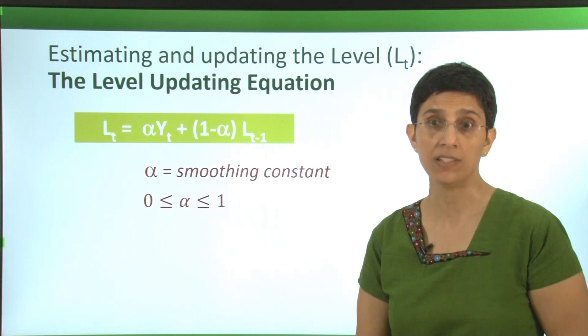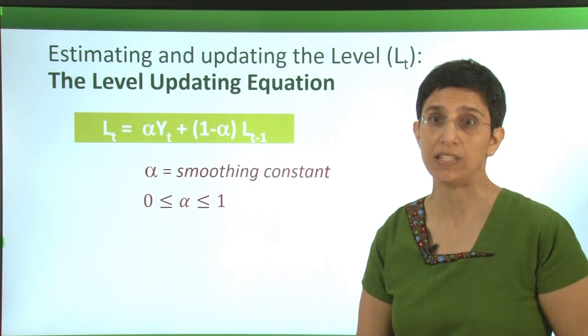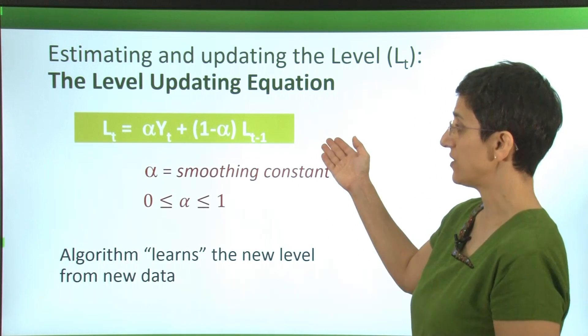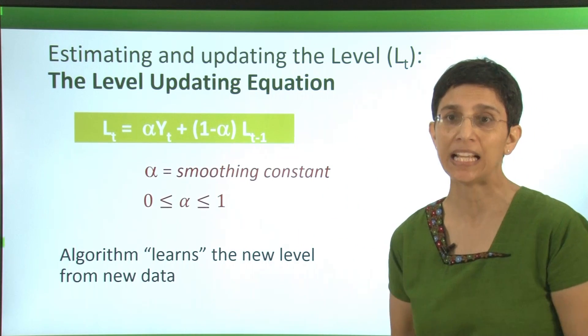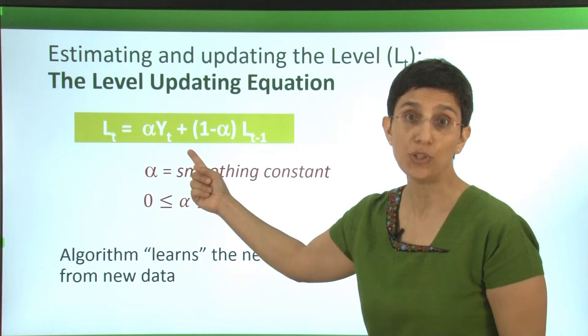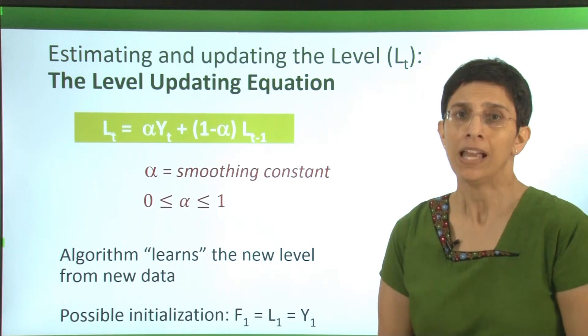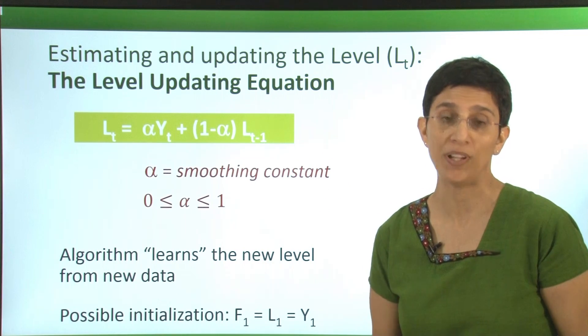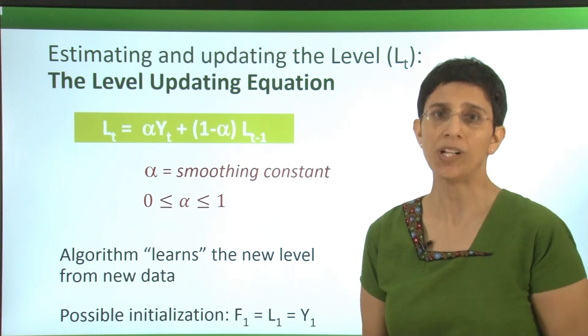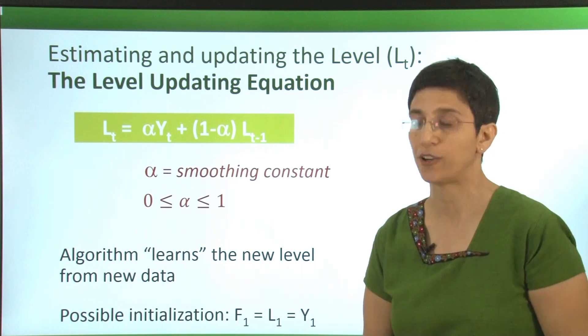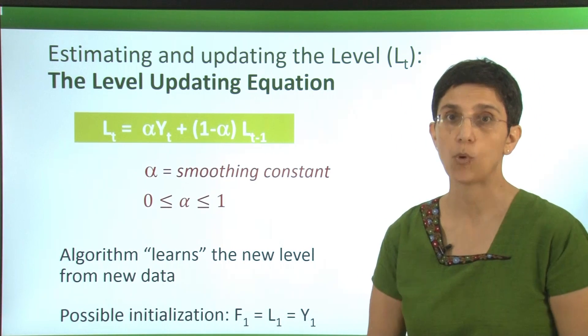Alpha is called the smoothing constant, and it's a number somewhere between 0 and 1. What this tells us is that the algorithm is learning the new level from the newest data that it's seeing. How do you start this whole system? Well, you have to initialize it with L_1 at some point. There are different ways of doing it, and one option is simply setting L_1 equal to the first record in your series y_1.